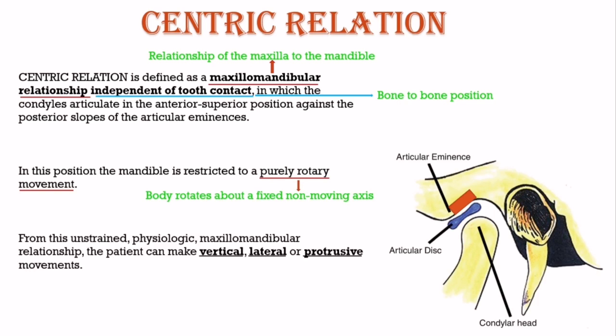From this unstrained — that is, not forced or produced by effort — physiologic — that is, something which is normal — maxillomandibular relationship, that is jaw relationship, the patient can make vertical, lateral or protrusive movements. To know in detail about each movement, you can watch my video on maxillomandibular movements. Centric Relation is clinically useful as it is the starting point for developing occlusion, and a repeatable reference position as it remains constant throughout life.